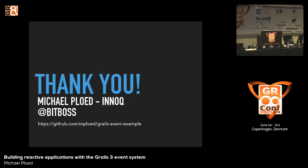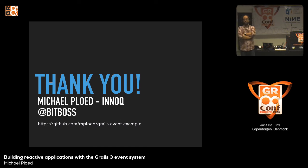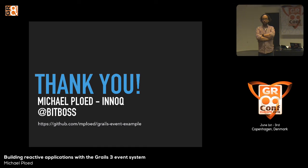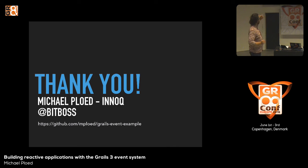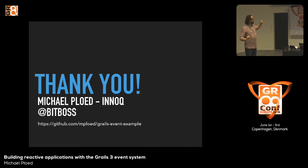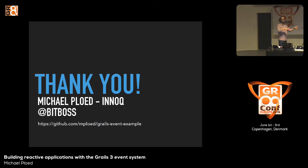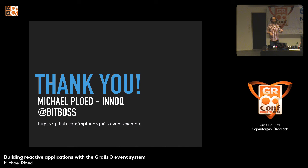To conclude: basically this event system is meant to move away from orchestration toward reaction. You don't have explicit orchestration — instead, you publish to Twitter, and after successful publishing you fire off an 'article has been published to Twitter' event and react on that. The link to the code is available and I'll tweet it at @bitboss. I'll also do another talk this afternoon on how to migrate from Grails 2 to Grails 3.1 — I'd be happy to see you again. Thank you very much.